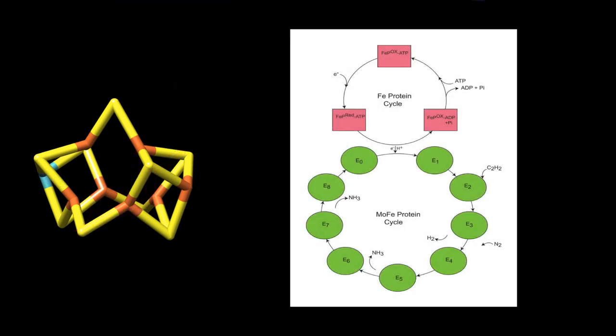This diagram details the full cycle, which involves eight proton and electron transfers. The most notable step is the change between E3 and E4.